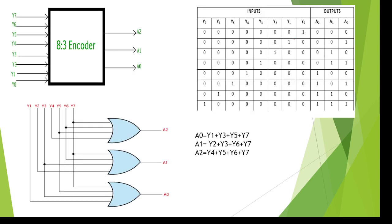There are eight inputs and three outputs. There are eight possibilities. When all are zeros and the first bit (LSB) is one, we encode this to 000. When the second position is one and remaining all are zeros, we encode to 001, then 010, and so on. For the A0 value: A0 is 1 at Y1, A0 is 1 at Y3, A0 is 1 at Y5, A0 is 1 at Y7.